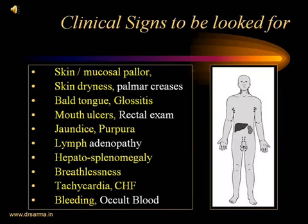The important clinical signs to look for in any patient of anemia include: pallor of the mucosa and pallor of the skin. In fair-skinned individuals, skin pallor can be noticed. In dark-skinned persons, it is difficult to assess pallor of the skin; in such cases, examination of the palmar creases will tell us whether the patient is anemic or not. In an anemic patient, pallor of the mucosa will be evident.